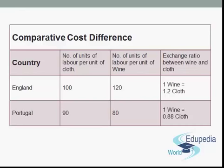From this example it is evident that Portugal has an absolute superiority in both branches of production. However, a comparison of the ratio of cost of production of wine (80/120) with the ratio of cost of production of cloth (90/100) in both countries reveals that though Portugal has absolute superiority in both branches, it may pay her more to concentrate on the production of wine, in which she has a comparative advantage over England, while importing cloth from England, which has a comparative advantage in cloth production. England will gain by specializing in cloth and selling it to Portugal in exchange for wine.